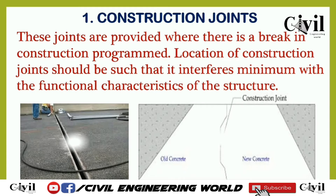Construction joints are provided where there is a break in the construction program. The location of construction joints should be such that it interferes minimally with the functional characteristics of the structure. These joints are also provided in those places where multiple placements of concrete take place, since in huge projects concrete is sometimes poured in more than one step.